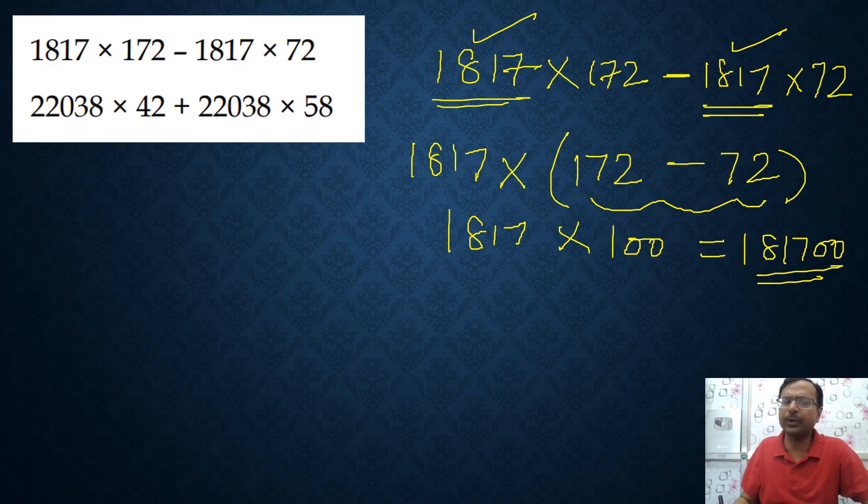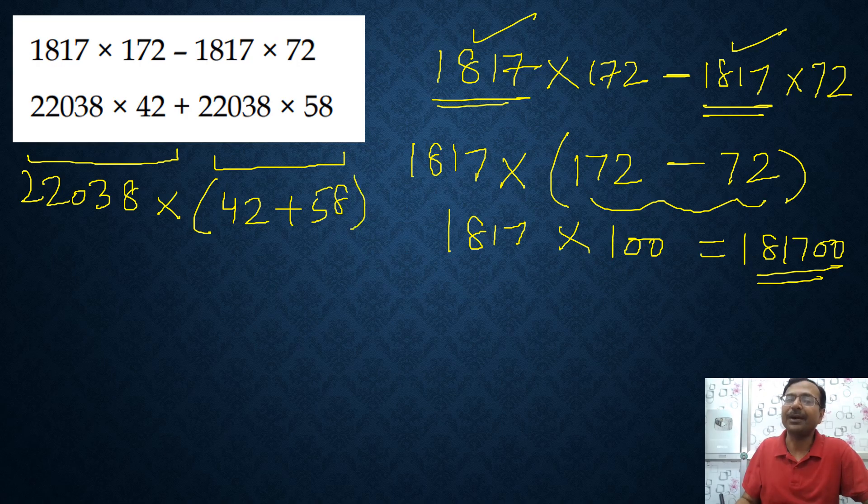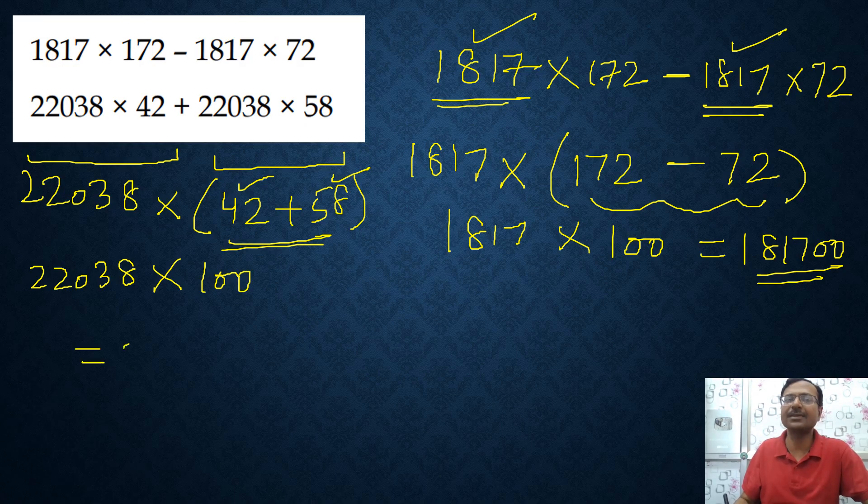You can try the next one. I am sure you are going to get it. 22038 is an obvious common factor because that forms the part of the first part and the second part both. So if you take that out you will have 42 left in the first part and 58 left in the second part. Therefore 22038 will be multiplied by, again the first rule I told you in the first slide, 42 and 58 they end in the digits, unit digits. If you add them you are going to get a 0. So 42 plus 58 is 9 tens plus 1 ten, that is 10 tens or 100, and therefore the answer for the question is 2203800.